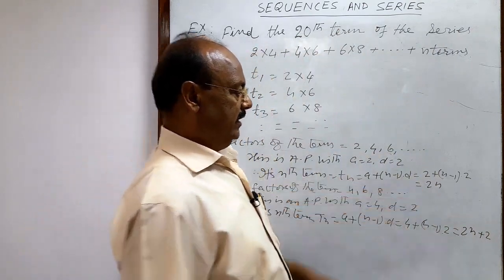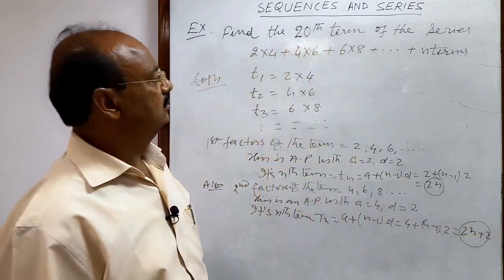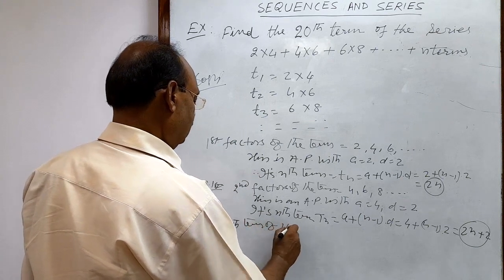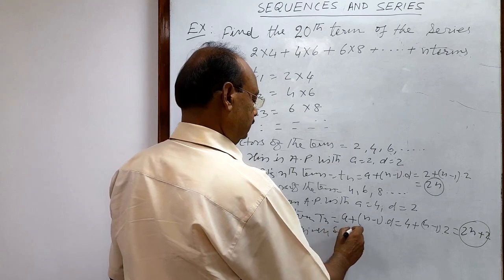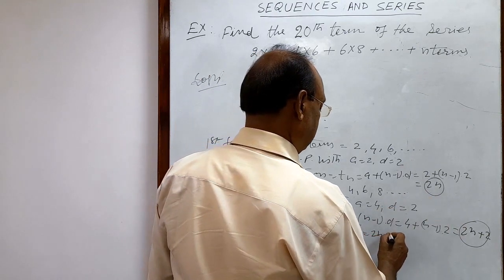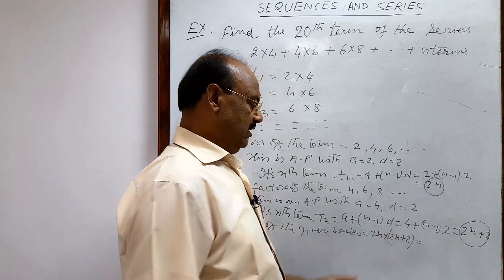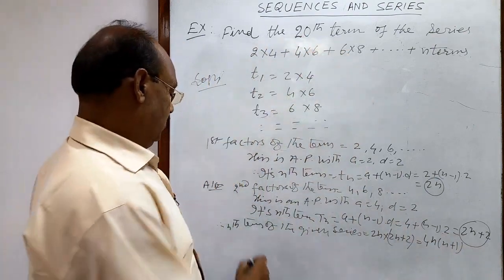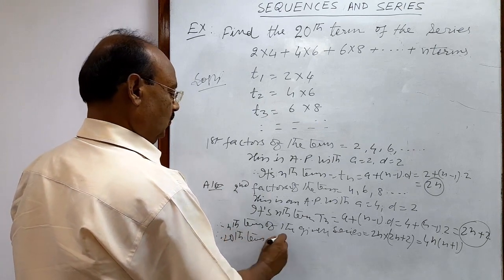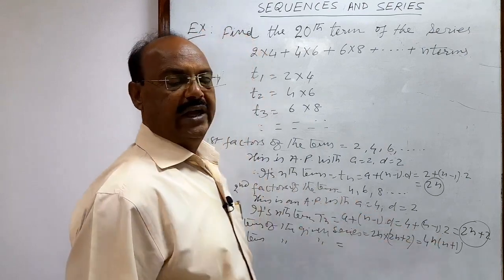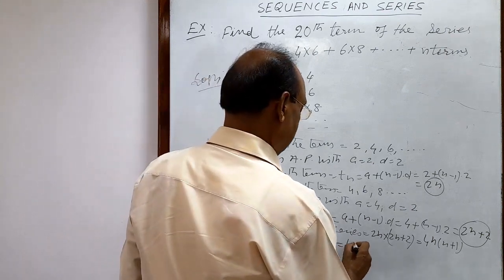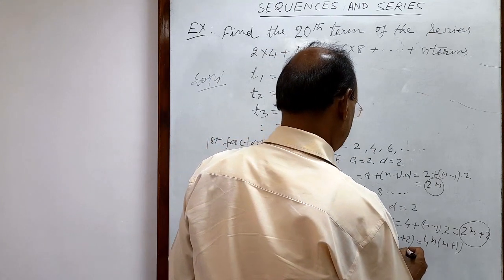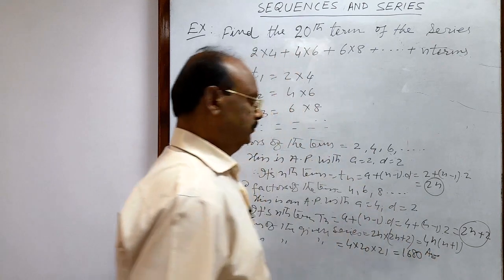The product of these two nth terms gives the nth term of the given series. So the nth term = 2n × (2n + 2) = 4n(n + 1), taking 2 as common. Since we need the 20th term, we substitute n = 20: 4 × 20 × 21 = 1680. This is the answer.